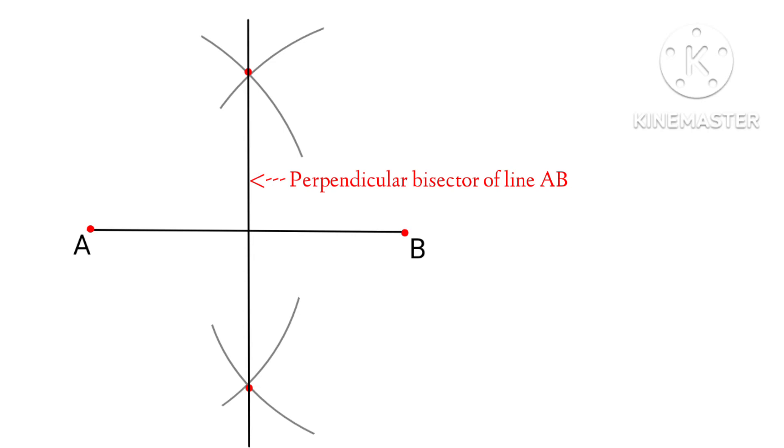Perpendicular bisector of a line will be perpendicular to the line as well as it will pass through the midpoint of the line.